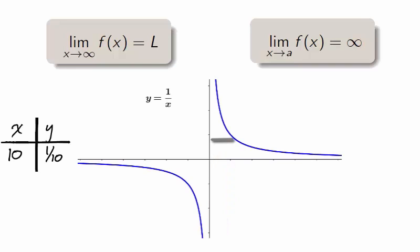If we want a y value smaller than 1 tenth, then we need to take an x value larger than 10. If we want a y value smaller than 1 millionth, then we need to take an x value larger than 1 million. We can continue to find smaller positive y values by choosing larger x values. Therefore, we can estimate that the limit as x approaches infinity is 0.